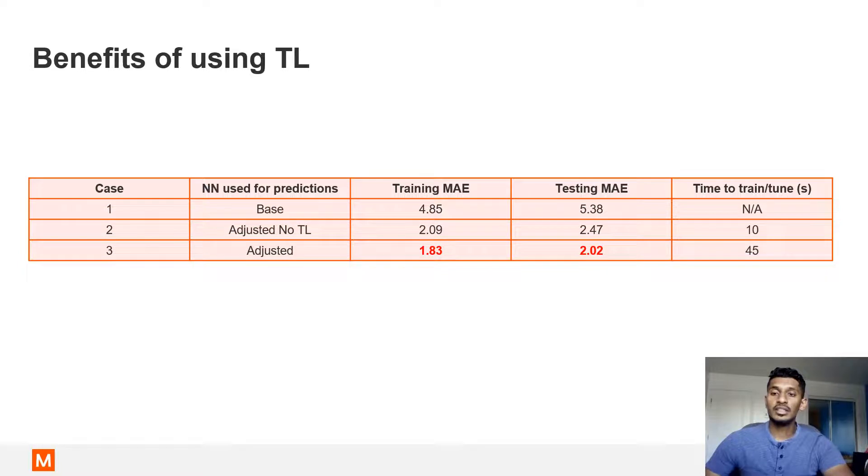The last experiment conducted was to investigate the effectiveness of using transfer learning. For this part, the mean absolute error and the time to train or tune were computed for the following cases: using the base neural network to predict adjusted stresses, therefore no transfer learning; training a neural network using only adjusted data and use it to predict adjusted stresses, again no transfer learning; tuning the base neural network to obtain an adjusted neural network and use it to predict adjusted stresses with transfer learning.